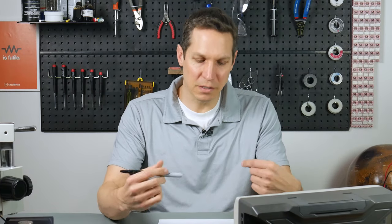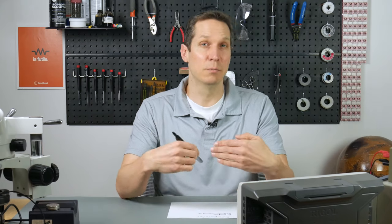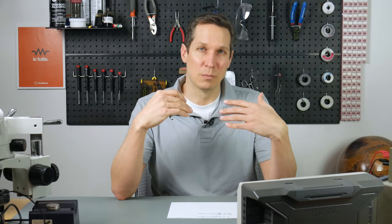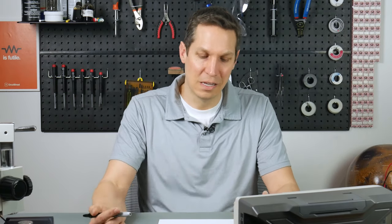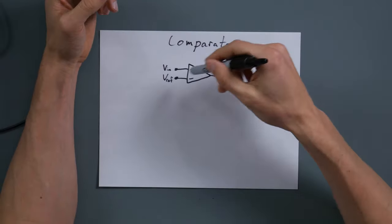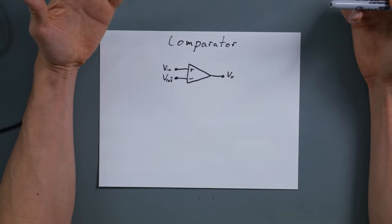They have dedicated comparators out there that specifically work for this. They have a much faster response time, they can shoot from zero to one and one to zero much quicker, they latch their outputs — so it's more stable, and they're just better in every way. But sometimes you have an op amp sitting around, and if you're in a pinch, this will totally work. Unless you're looking for extremely high performance, an op amp will work in most cases.